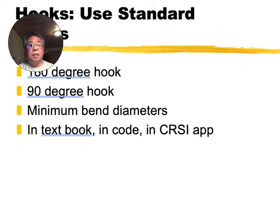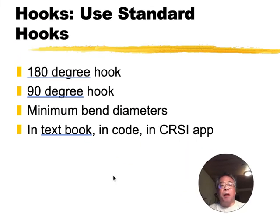Before we talk about how to calculate that development length, we need to talk about what actually is a hook. There are 180-degree hooks and 90-degree hooks. There are minimum bend diameters for these, and these dimensions are specified as well. You can't bend those as tight as you want. To know what these dimensions are, you can look them up in the textbook, you can look them up in the ACI code, or you could look in that CRSI app that I showed the class.